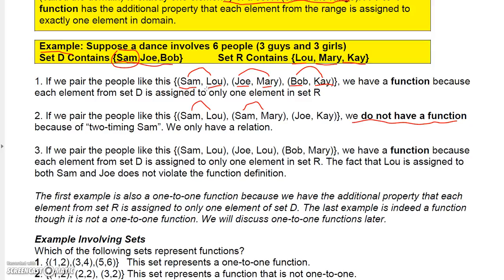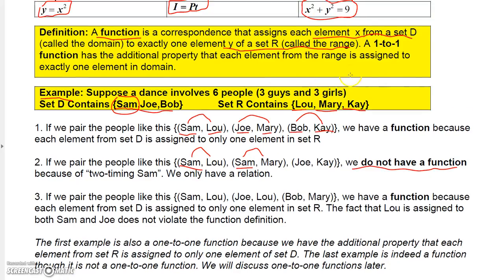That's the primary difference — how you can tell whether something is a function or not. It's usually quicker to tell if something's not a function, because all you have to do is find one element assigned to two different range elements. Once you find one such case, you know it's not a function.